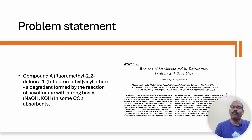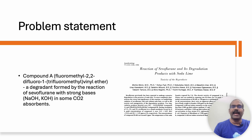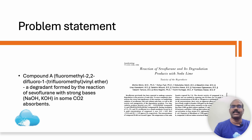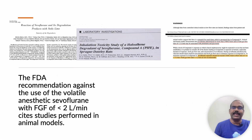First, let us check why there were concerns against the use of low fresh gas flows with sevoflurane. The manufacturer label for sevoflurane cites studies in animal models that showed evidence of renal toxicity due to exposure to Compound A — that is fluoromethyl-2,2-difluoro-1-trifluoromethyl-vinyl ether — a degradant formed by the reaction of sevoflurane with strong bases like sodium hydroxide and potassium hydroxide in some CO2 absorbents. The FDA recommendation is against the use of sevoflurane with fresh gas flows less than 2 liters per minute, citing studies performed in animal models.